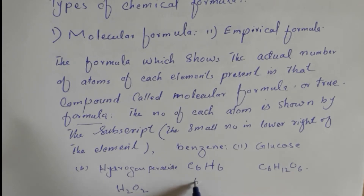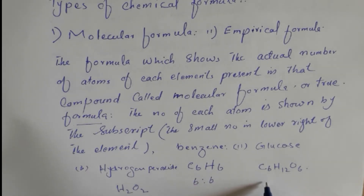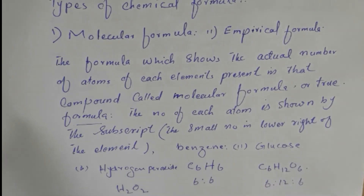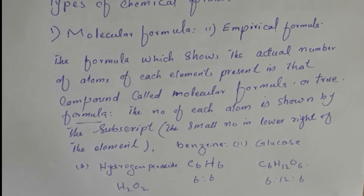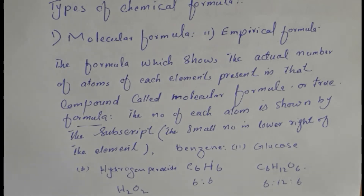In benzene's formula you can see that there are six carbon and six hydrogen atoms. In glucose's formula, the actual number of carbon is six, hydrogen is twelve, and oxygen is six. In hydrogen peroxide, the actual number of hydrogen is two and the actual number of oxygen is also two. So molecular formula gives the actual number of atoms in the molecule of a substance.